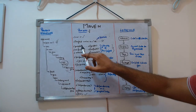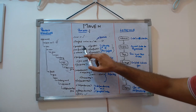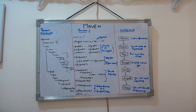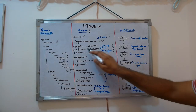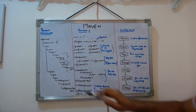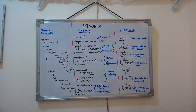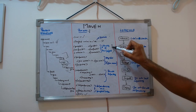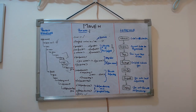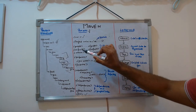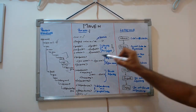The groupId you might set to something like 'com.conceptencoding', the artifactId to your app name like 'learning-spring-boot', and the version to something like '0.0.1'. Together, groupId, artifactId, and version form the unique identity of your project.